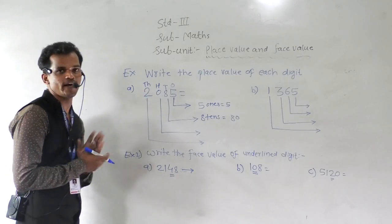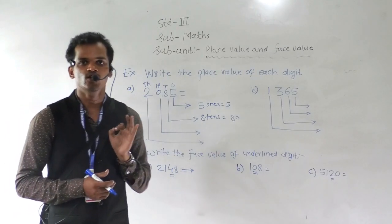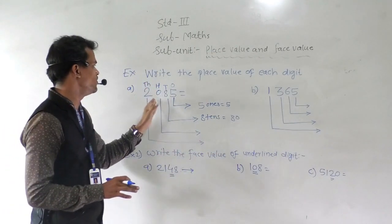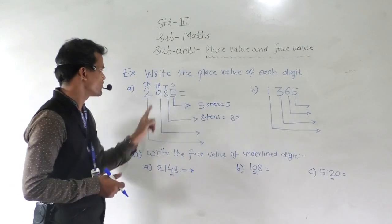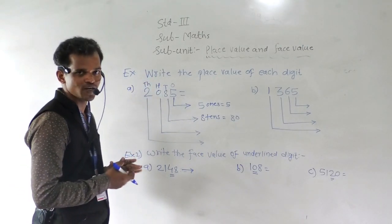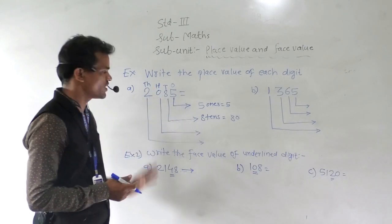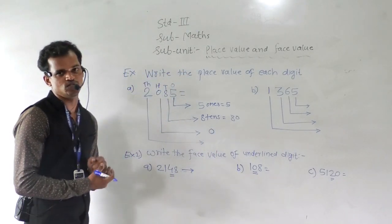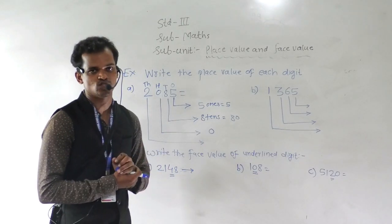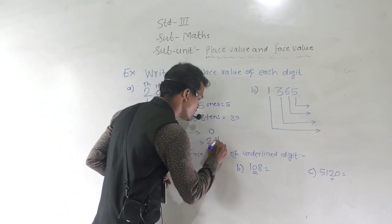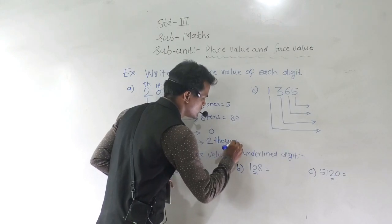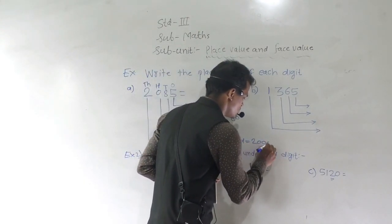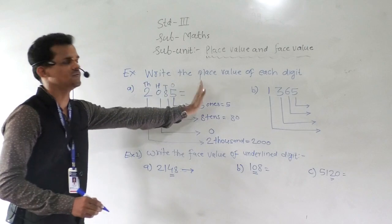This 0 comes at the hundreds place, but the place value of that 0 is 0. Then 2 comes at the thousands place. So 2 multiplied by 1000 equals 2000. So these are the place values of each digit in the number 2085.